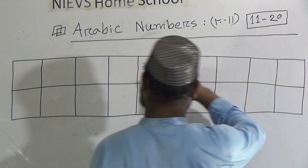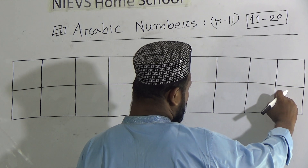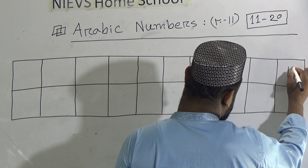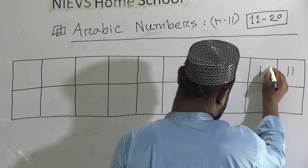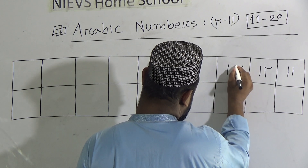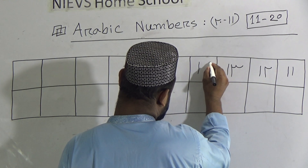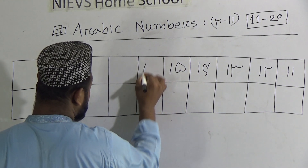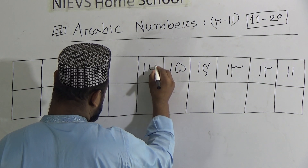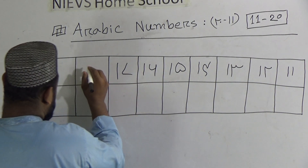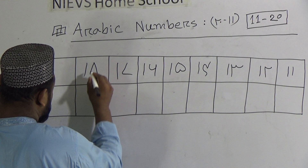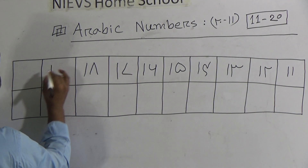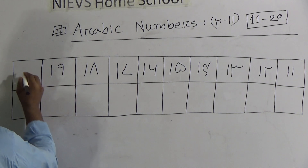I will write down Arabic numbers in the upper box and the English equivalents in the lower box. Starting from 11: ahada asharu, 12: ithna asharu, 13: thalatha ta asharu, 14: arba ta asharu, 15: khamsa ta asharu, 16: sitta ta asharu, 17: saba ta asharu, 18: samaniya ta asharu, 19: tisa ta asharu, and 20: ishruna.